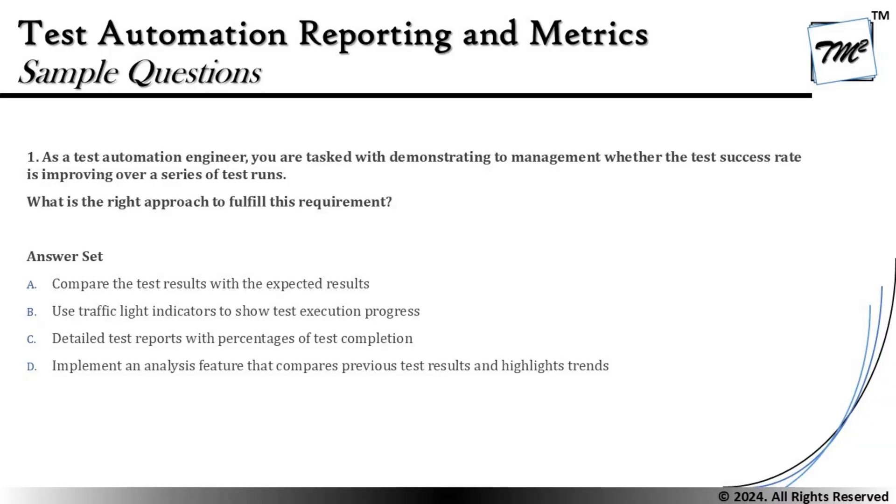Option A says: compare the test results with the expected results. Comparing results would only give you a definition of pass and fail — comparing expected and actual results. At the end of the day, all you get is the result of a single test, not a series of results. We must correlate every option back to what the question is actually asking.